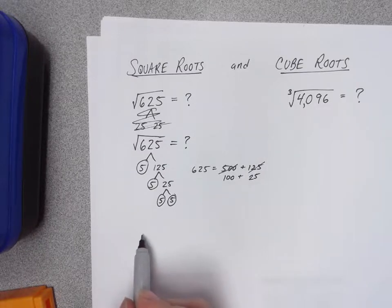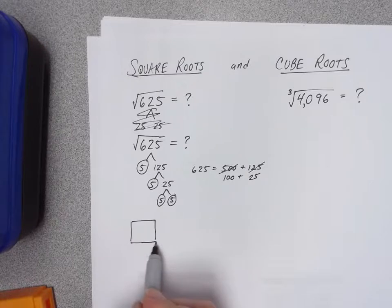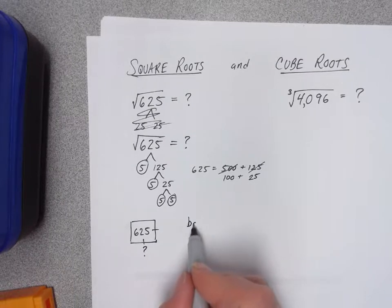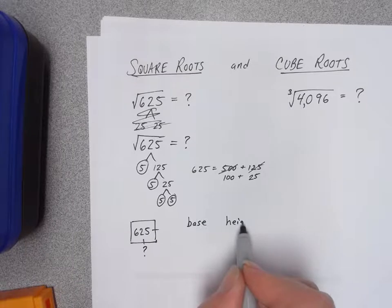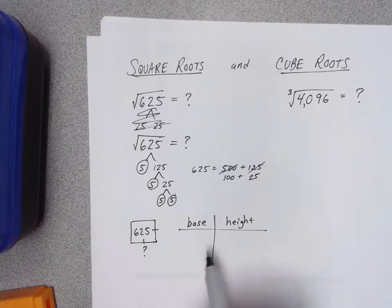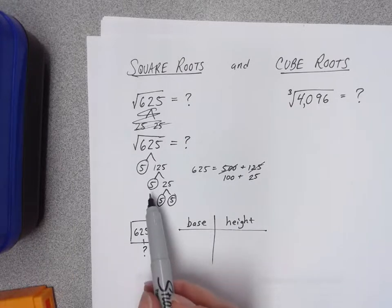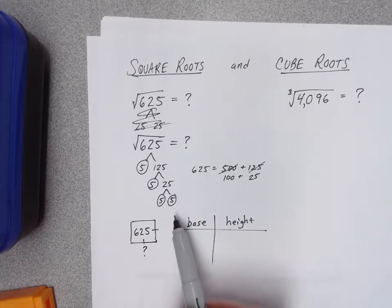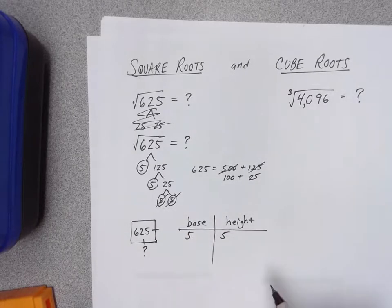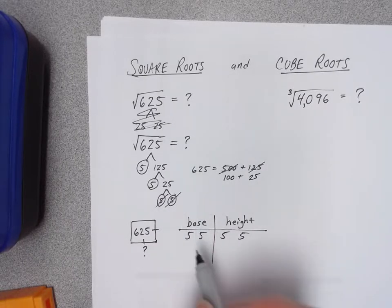When talking about a square, I'm really talking about its area — the area is 625. What I want to find is the length of its base or its height. To do that I need two groups: a base group and a height group. On a square, both the base and the height are the same, so both groups should have the same amounts. Go back to your tree, look at your primes, and decide what to give each group. Each group could get a 5 — and there are two more fives, so each group gets another five.